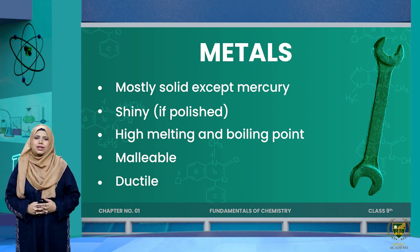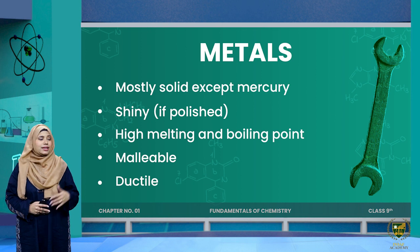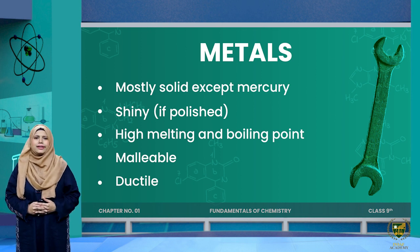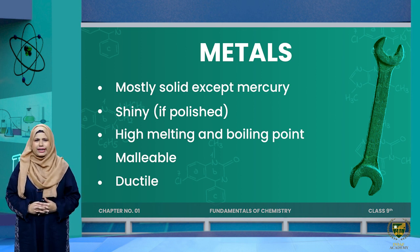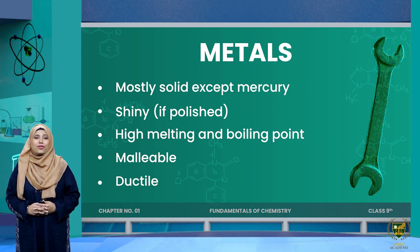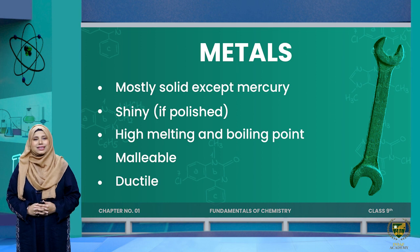Metals also have the property of being ductile, meaning they can be drawn into wires. Have you ever seen a wire made of rubber? No, because it is very difficult to turn rubber into wire. Wires are mostly made of metals.